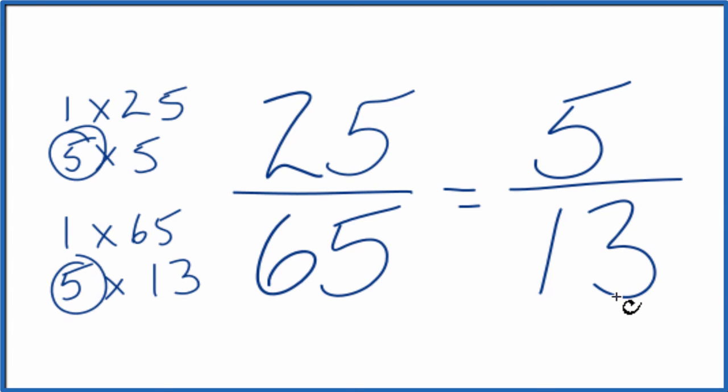We can't reduce this any further. These are equivalent fractions, 5 divided by 13, 25 divided by 65. You get the same number. It's just that we've simplified or reduced 25 over 65 down to 5 over 13.